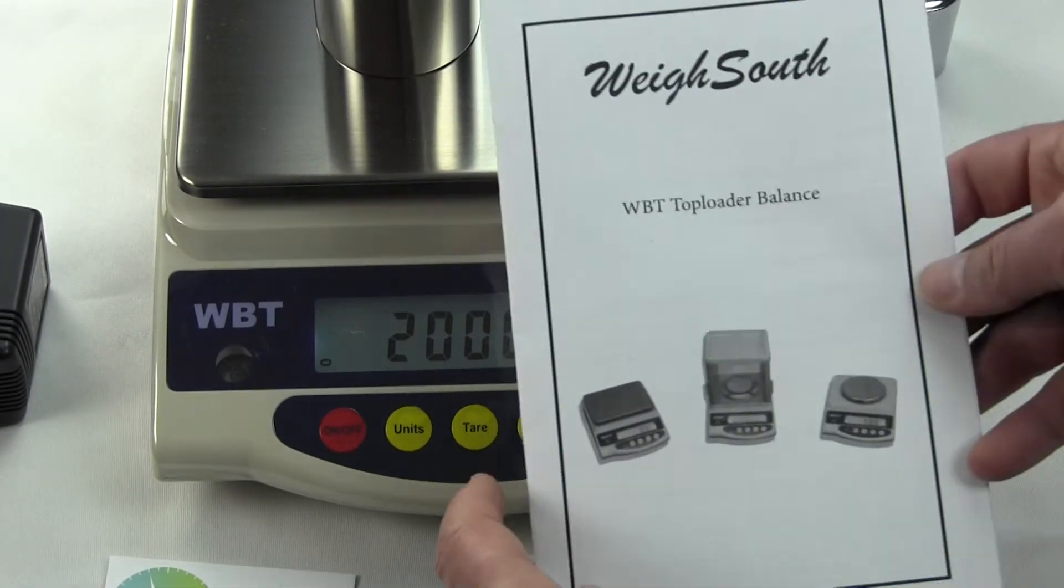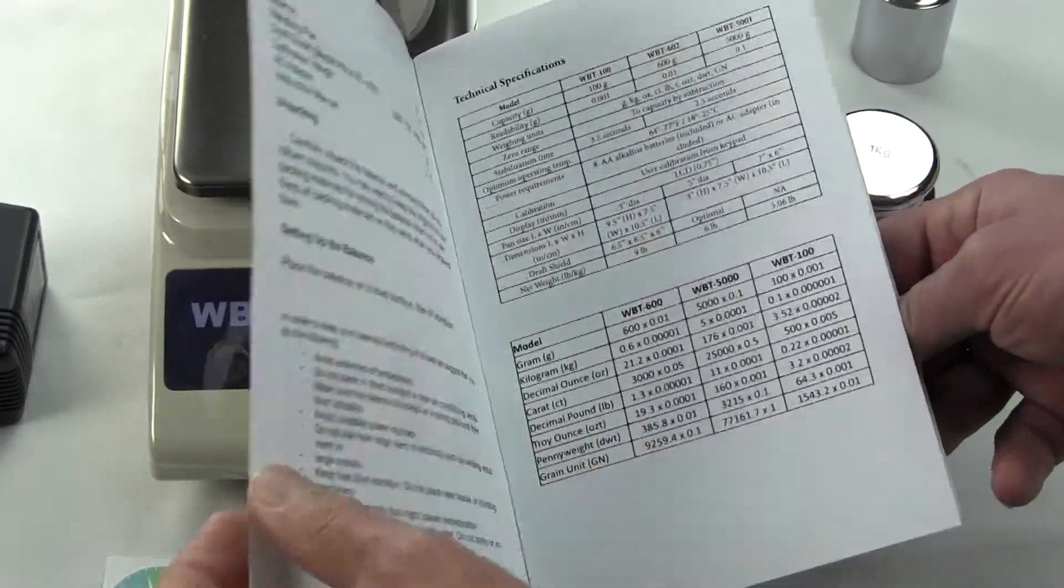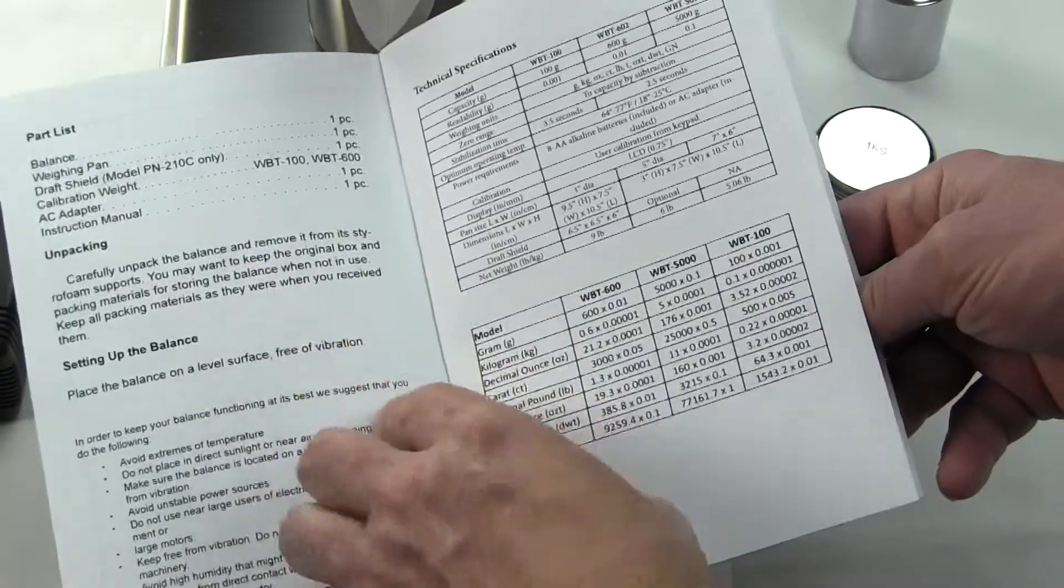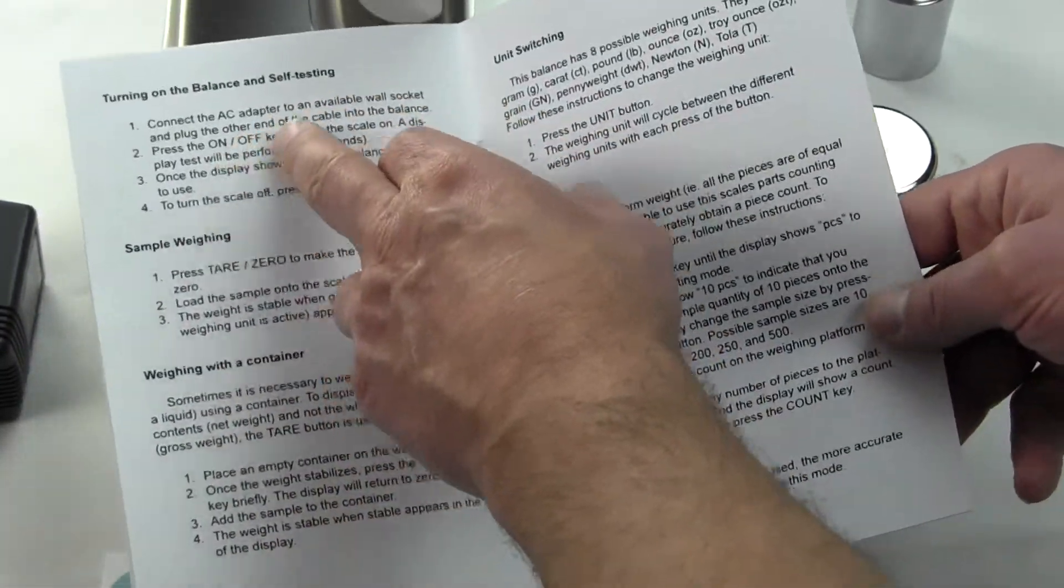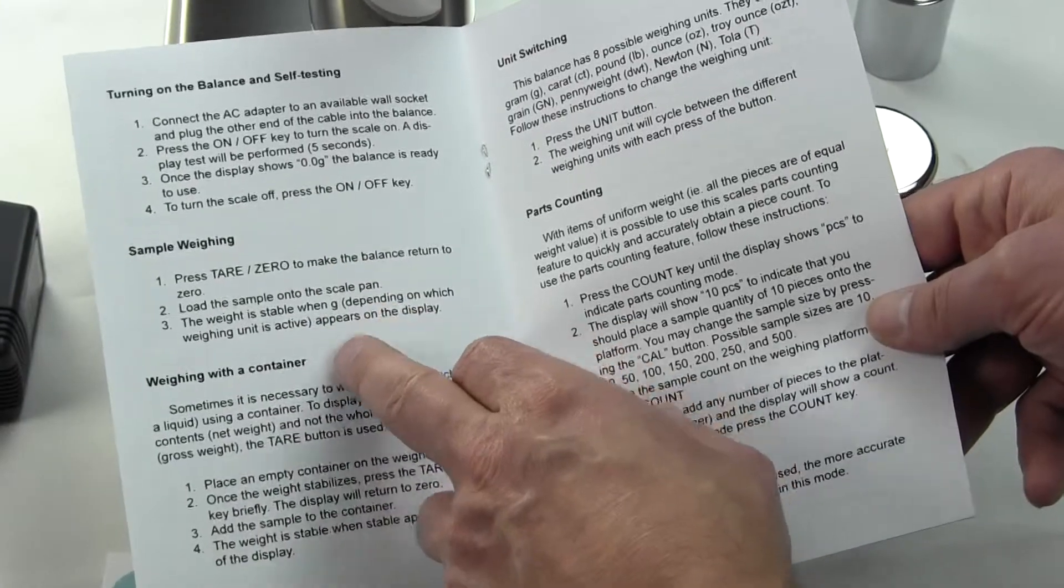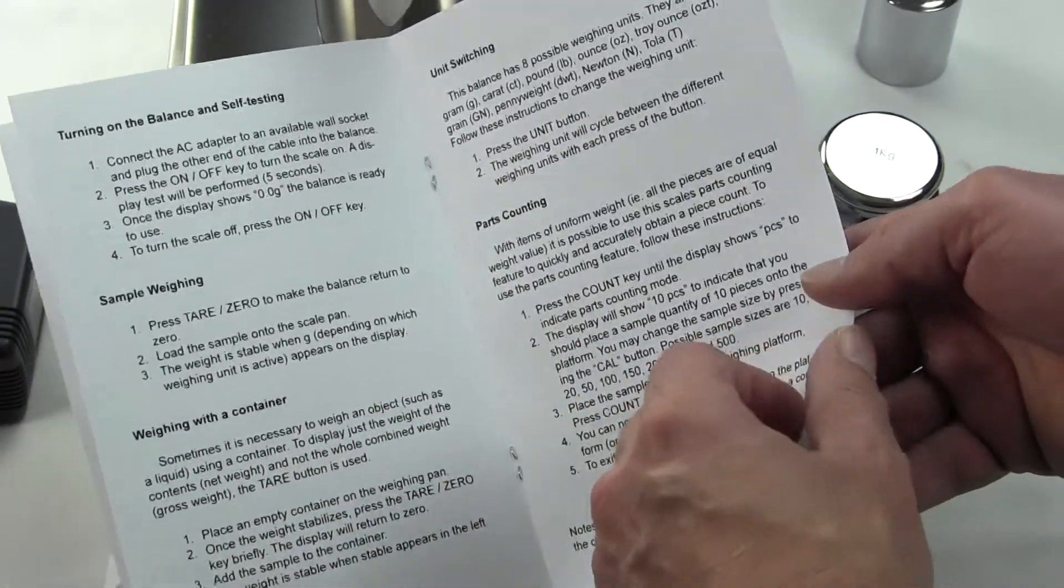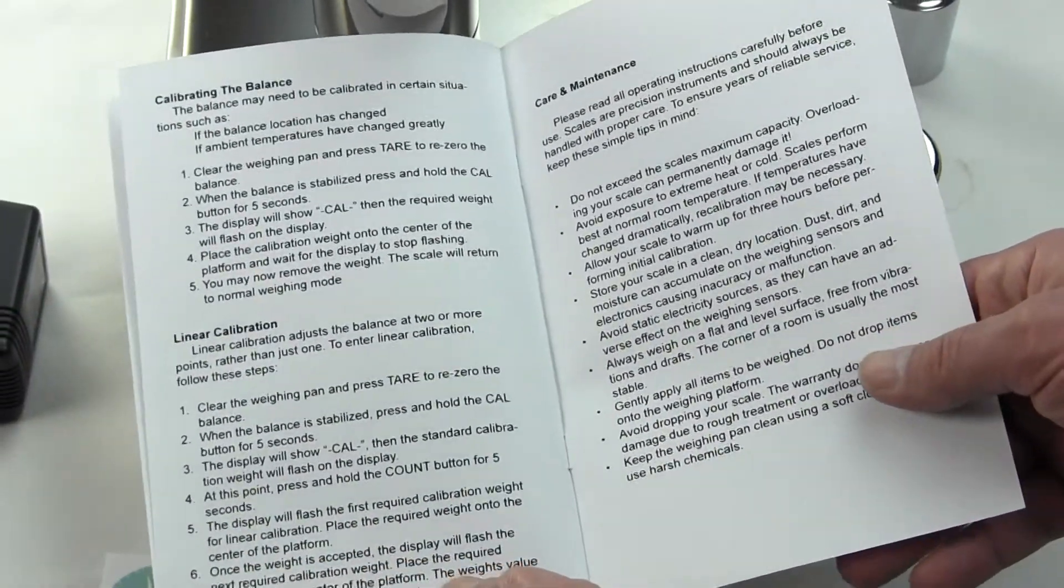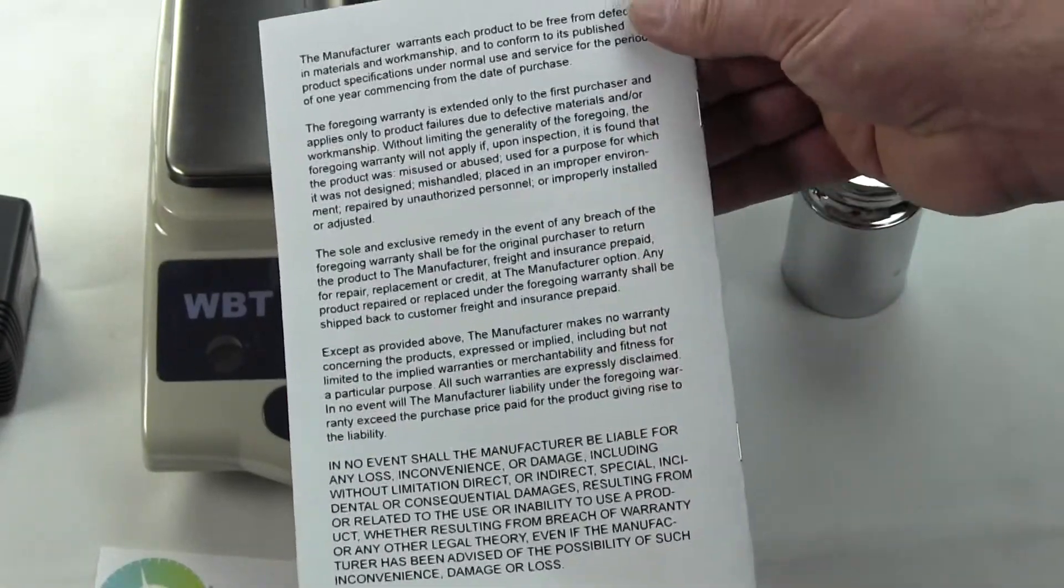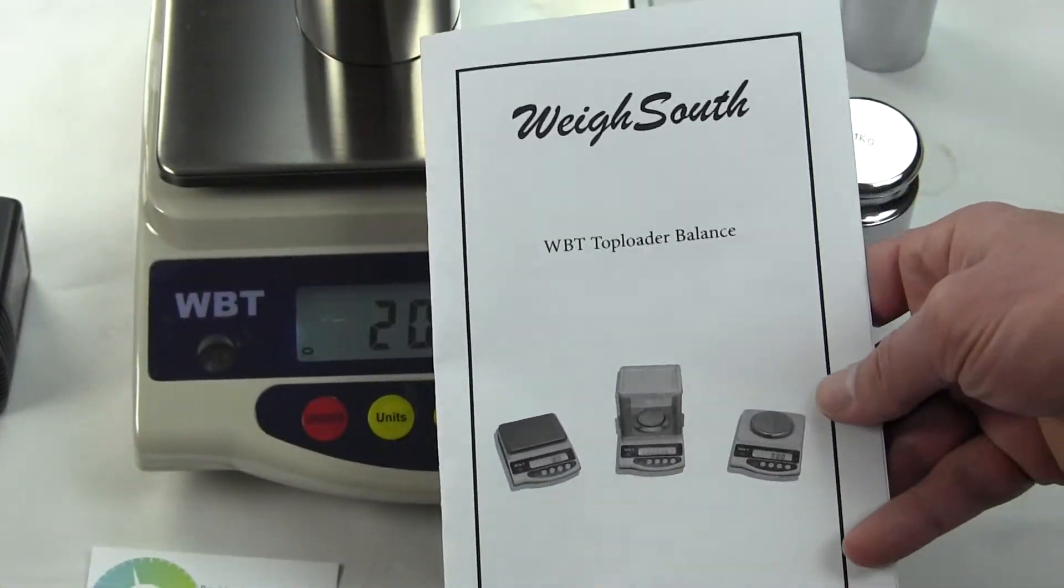WaySouth has done a great job with their manual. It's a very simple scale so there's not a ton of information, but they have good documentation explaining the setup of the scale, turning on the scale, the sample weighing, the container, the tare feature, switching the units, parts counting, calibrating the scale. WaySouth did a nice job for this kind of scale and this price range.